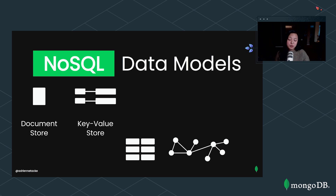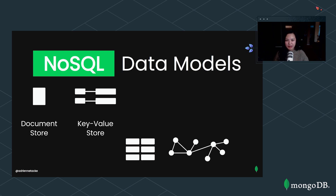Another way to model it is the key-value store. In this case you have keys and values — if you store your data and need quick access to it, you may use well-known keys, probably hashed, to quickly access those values. These are your Redis's, your RoxDB's, your Apache Ignite's.